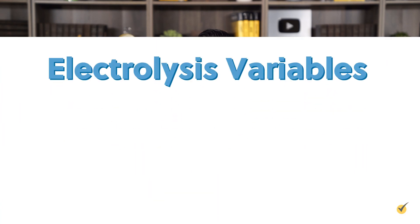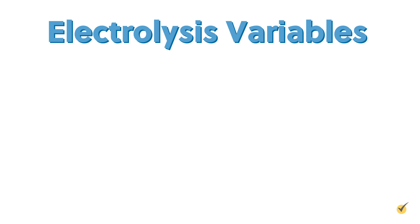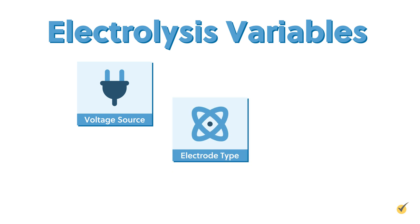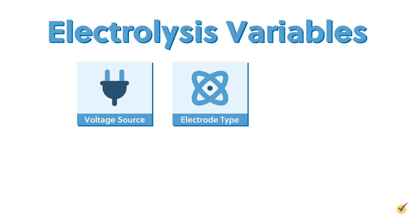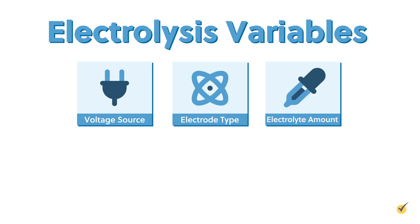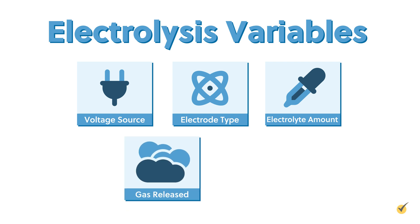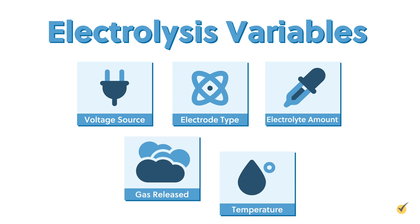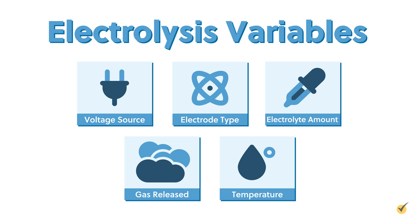Now how does this relate to science? One of my favorite experiments from science class was electrolysis of water. We used a battery to separate water into its base components. The variables here were the voltage power source, the type of electrodes used for conduction and reaction, and how much electrolyte was added to the water to increase conductivity. The amount of hydrogen and oxygen gas released, and the temperature of the water, were also variables.